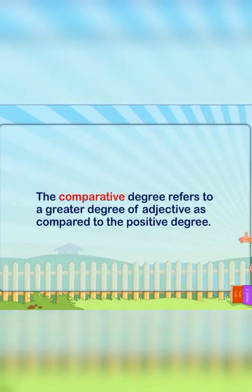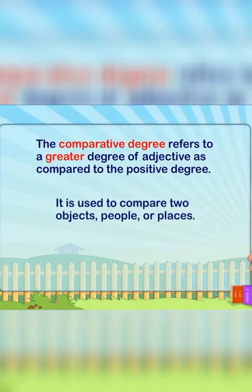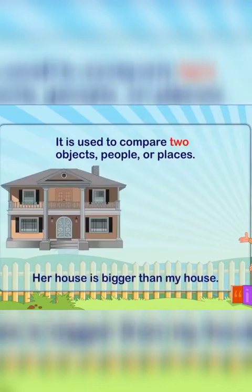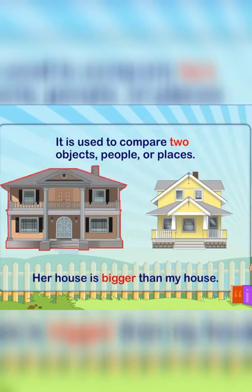The comparative degree refers to a greater degree of the adjective as compared to the positive degree. It is used to compare two objects, people, or places. For example: her house is bigger than my house.